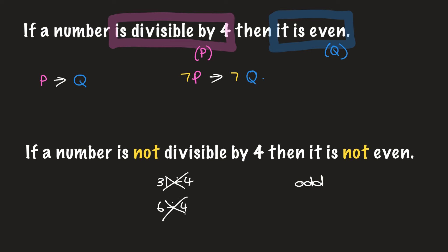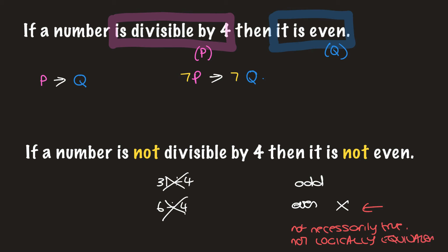Let's try six: it is not divisible by four, but it is even. This is what we mean when we say if P then Q is not logically equivalent to not P then not Q, because it's not necessarily true. Not P then not Q is not necessarily true — these are not logically equivalent. So just as a reminder, the inverse is not logically equivalent to the original conditional.